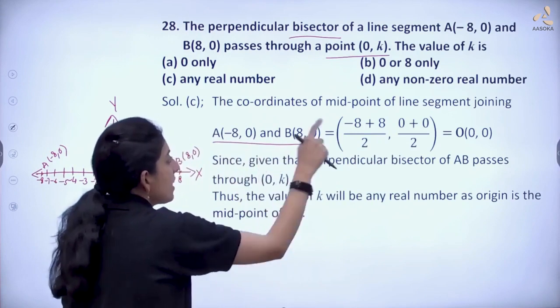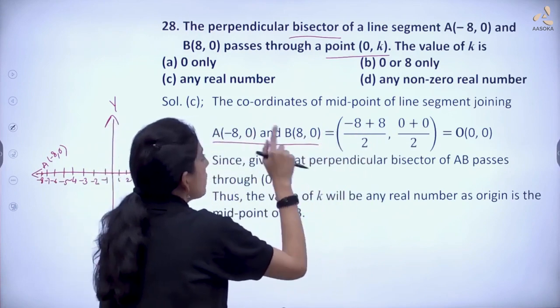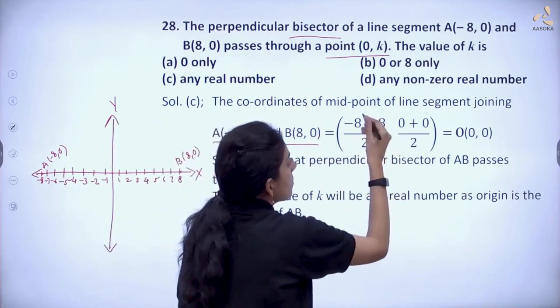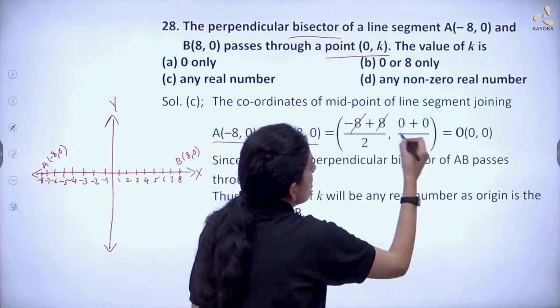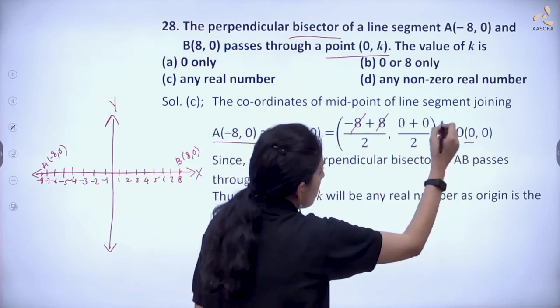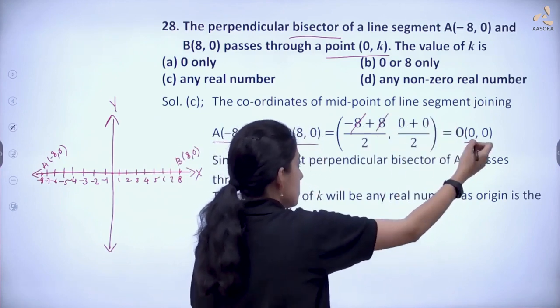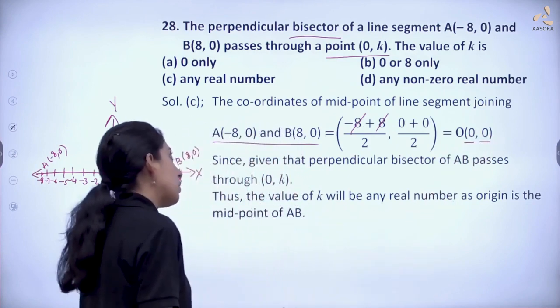Using the midpoint formula: (x₁ + x₂)/2 and (y₁ + y₂)/2. So (-8 + 8)/2 and (0 + 0)/2, that is 0/2 is 0 and 0/2 is 0. So we have found the point, the coordinates of that point is (0, 0).